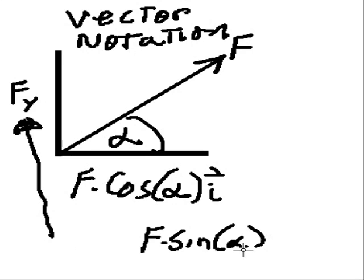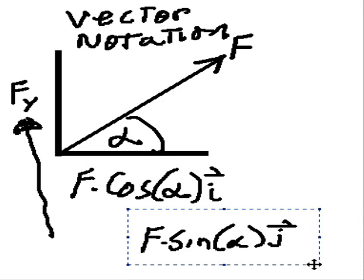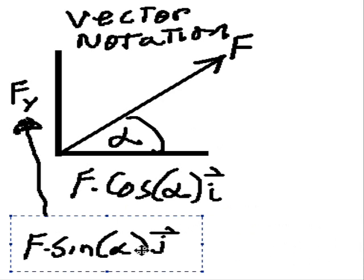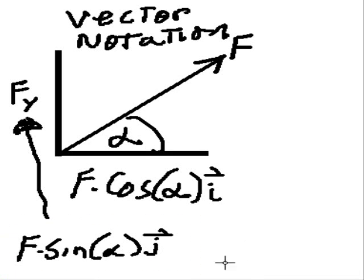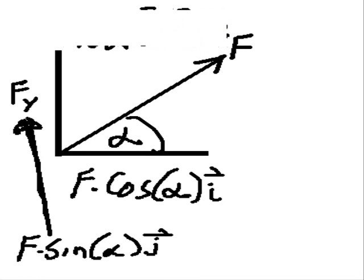And, you can just very easily say F sine alpha in the, not ith direction, but jth direction. That'll get you into trouble. And, the jth direction. Yes. So, you can represent Fy, vector Fy, the component Fy as F sine alpha in the jth direction. We can go further now.